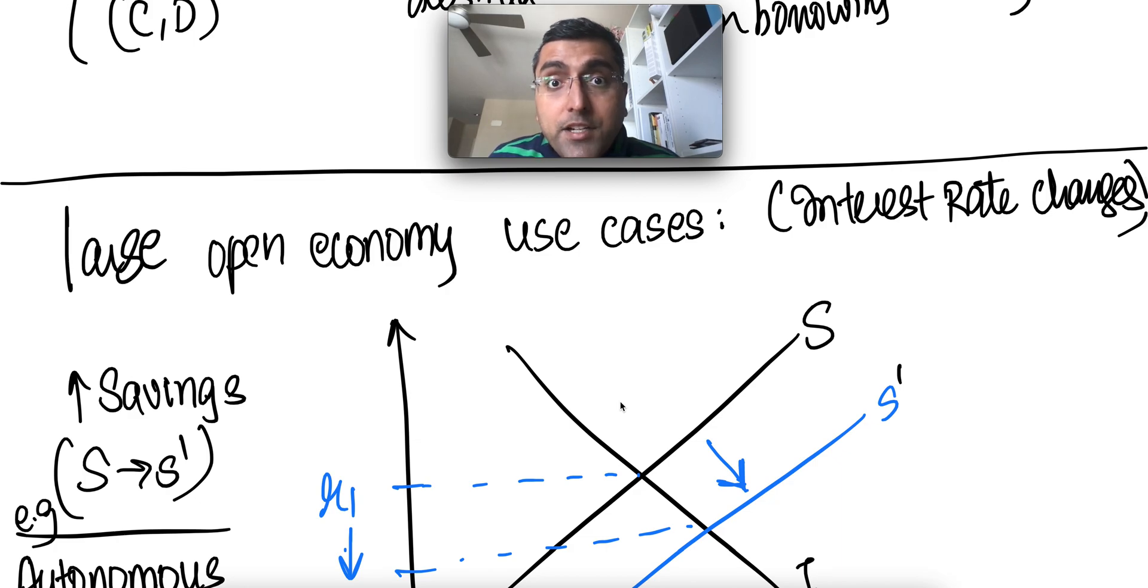And now let's look at the large economy, and then we will look at small economy. So the large open economy is something like United States, where changes in savings, changes in investments have an impact on interest rate, real interest rate.